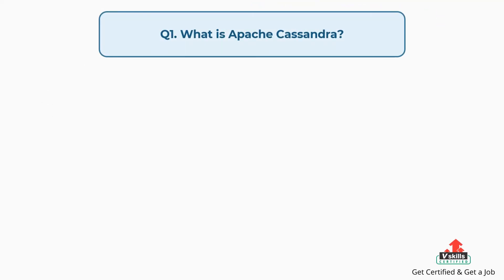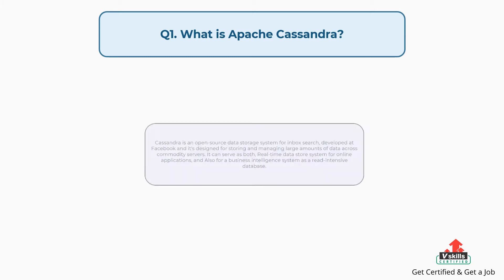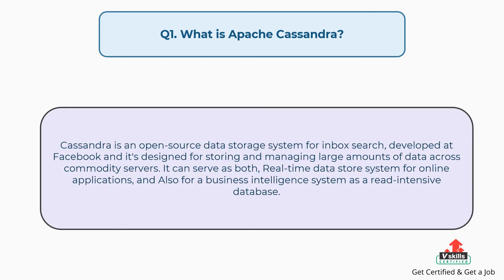Question number one: What is Apache Cassandra? Cassandra is an open source data storage system for inbox search, developed at Facebook, and it's designed for storing and managing large amounts of data across commodity servers. It can serve as both a real-time data store system for online applications and also for a business intelligence system as a read-intensive database.